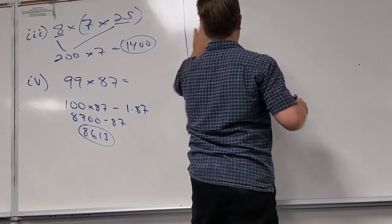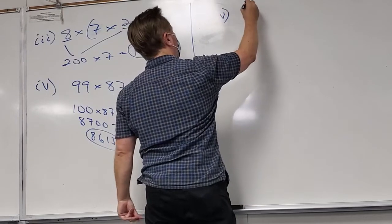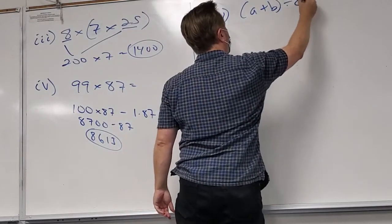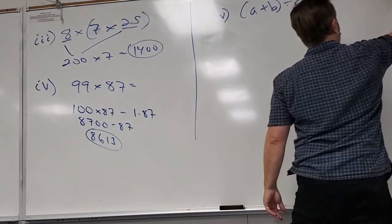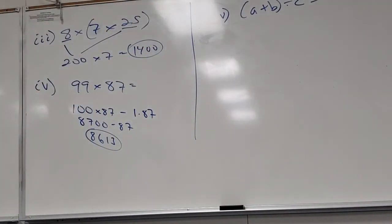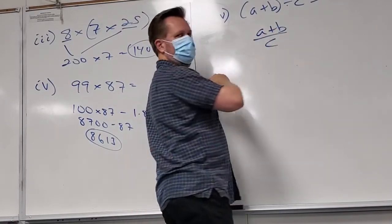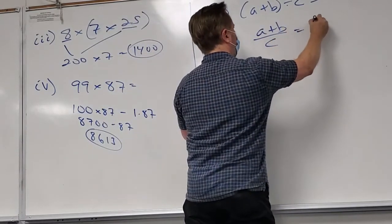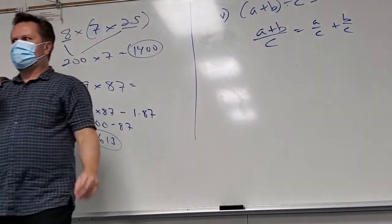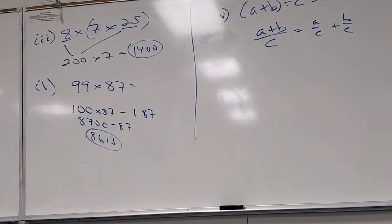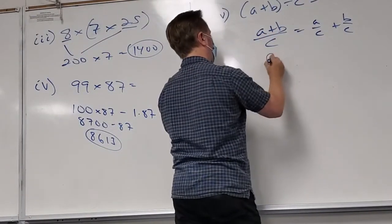Here's something weird — it looks like distribution written in a single line. Let's rewrite it: (a + b) divided by c equals a over c plus b over c. There's a very technical name for this — the distributive property of division. The name almost doesn't matter; we know it's true, it just looks strange when written as a single-line fraction.